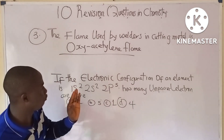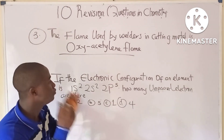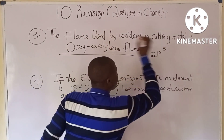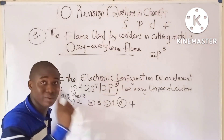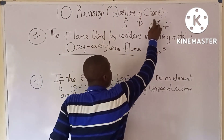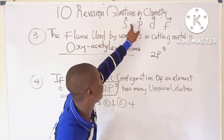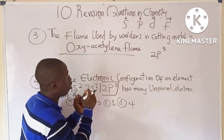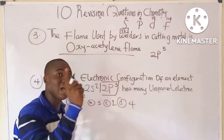Question four: if the electronic configuration of an element is 1s² 2s² 2p⁵, how many unpaired electrons are there? To determine the number of unpaired electrons, we look at the last orbital, which is 2p⁵. The s orbital holds a maximum of 2 electrons, the p orbital 6, the d orbital 10, and the f orbital 14.